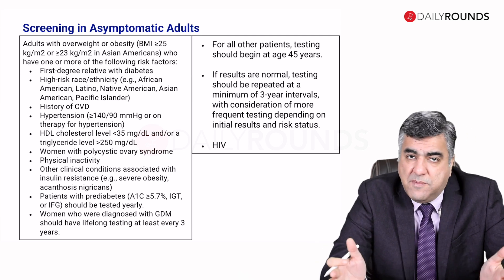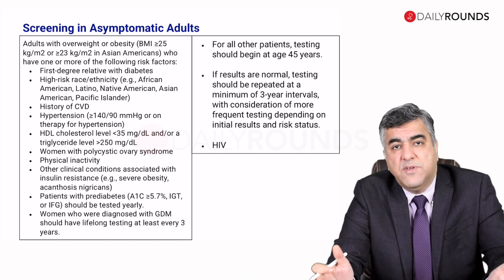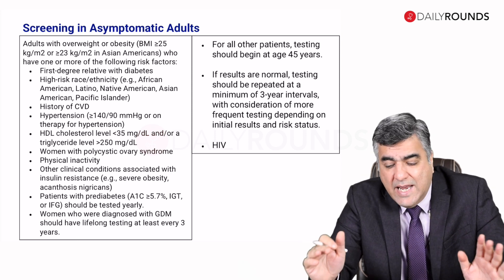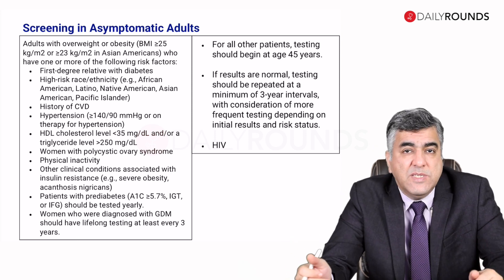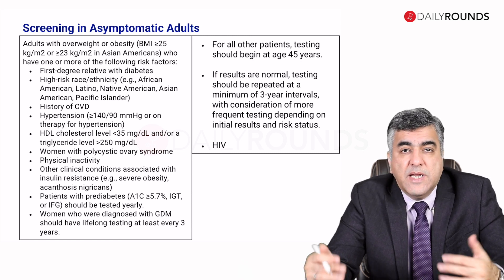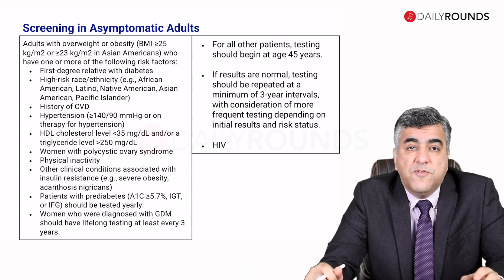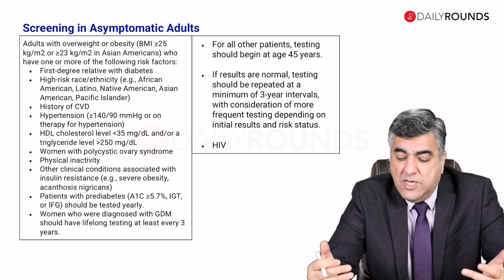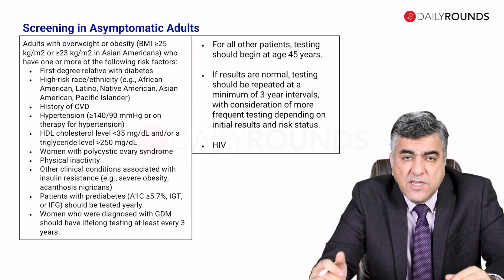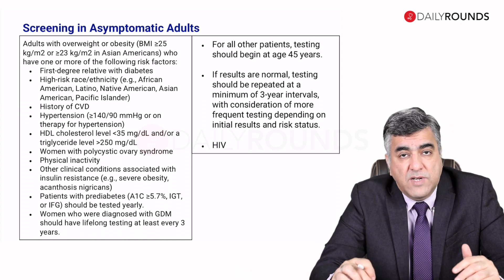If these risk factors are present, screening should be done earlier. If they do not have these risk factors, hypertension, etc., then at 45 years is when we should ideally be screening. If results are normal, testing should be repeated at regular intervals of three years, with consideration for more frequent testing depending on initial results and risk status. Individuals with HIV should also be tested regularly for the presence or onset of diabetes and prediabetes.